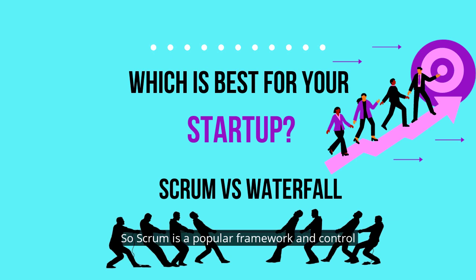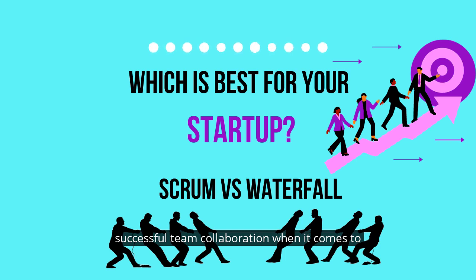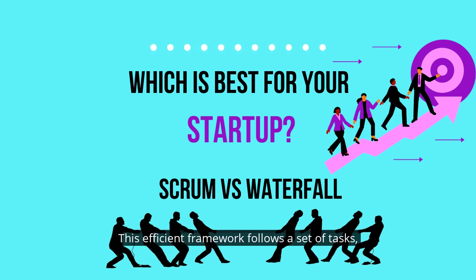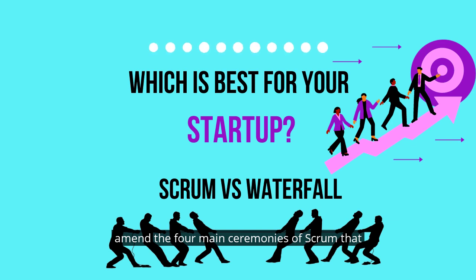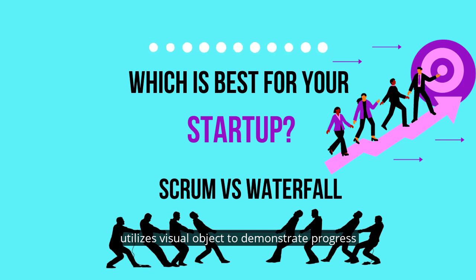First, let's understand what Scrum is. Scrum is a popular framework and control process to reduce project complexity and enhance focus on developing products that accomplish the precise needs of business. It's a simple yet efficient framework useful for successful team collaboration on complex projects. In this framework, sprints take one or two weeks to deliver a software module at regular intervals, following an agile methodology. The four main ceremonies of Scrum that provide structure to all sprints include sprint planning, daily stand-up, sprint demo, and presentation. During each sprint, the team utilizes visual objects to demonstrate progress and get gradual feedback.